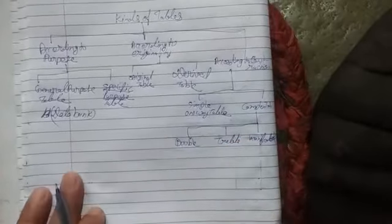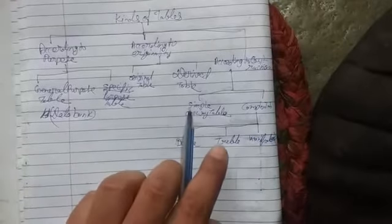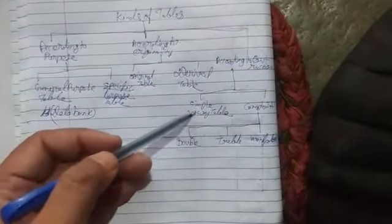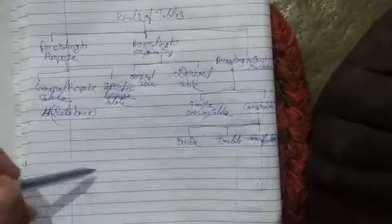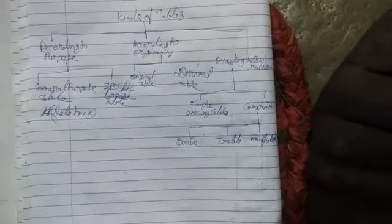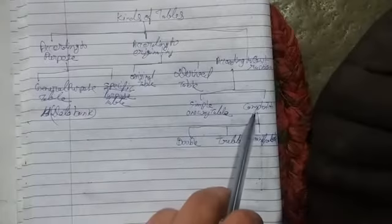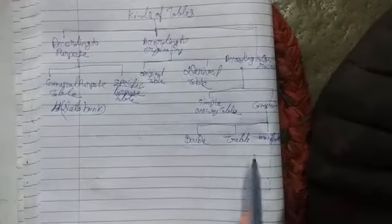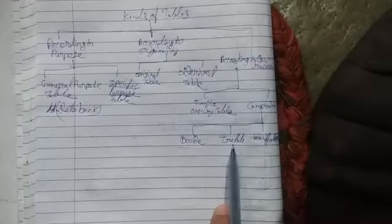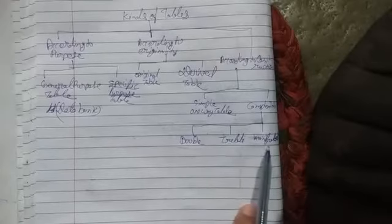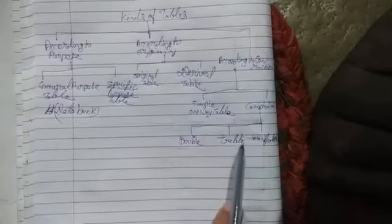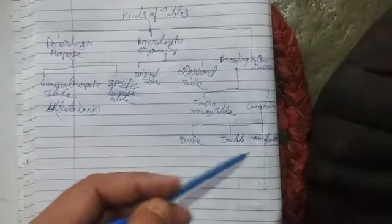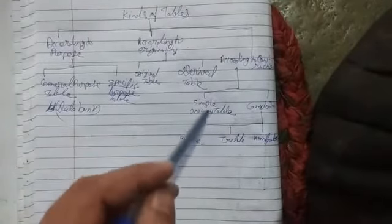It is very clear from the names themselves. A simple table is made simply with just two columns and the data presented in those columns. In complex tables where we have two folds, they are called double tables. Where we have three folds, these are called triple tables. And when we have more than three folds, that is called the manifold table. Now we will see how to construct these tables and how these formats change.